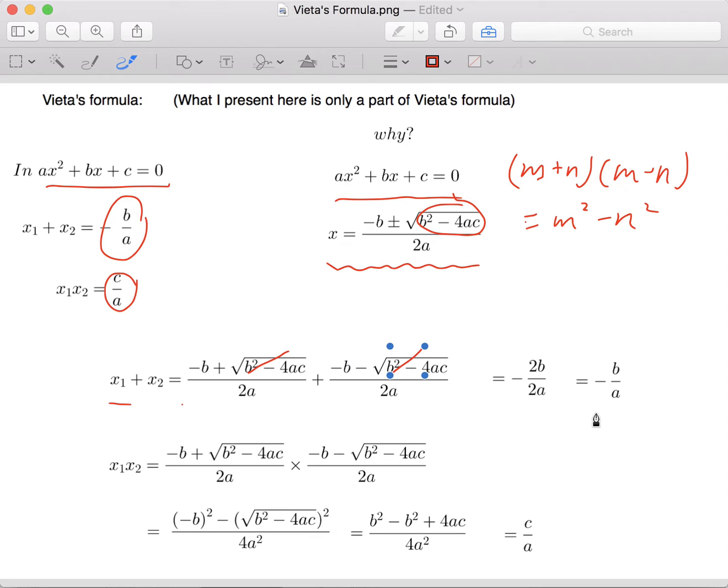What about the x1 times x2 one? If we multiply the two roots together, which is negative b plus square root of the discriminant over 2a times negative b minus square root of the discriminant over 2a, we can apply the formula m plus n times m minus n equals m squared minus n squared, which I write over here.